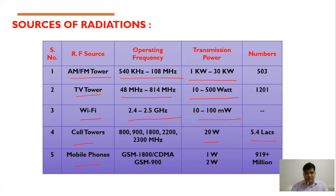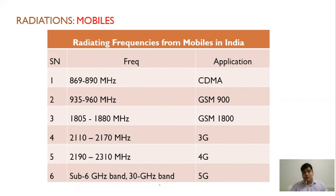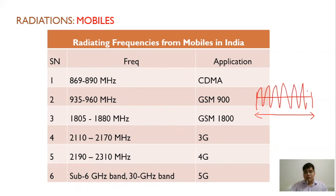These are the frequency ranges used for CDMA and GSM. GSM, which is 2G, uses two bands: the 900 band and the 1800 band. For 3G, 4G, and 5G — 5G is proposed for the sub-6 GHz band, and the 26 GHz band is being used for 5G. 30 GHz plus means 30 × 10⁹ Hz — within one second, 30 × 10⁹ cycles will be completed. You can imagine how high a frequency that is.